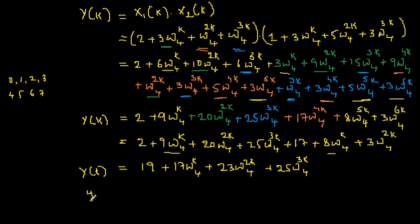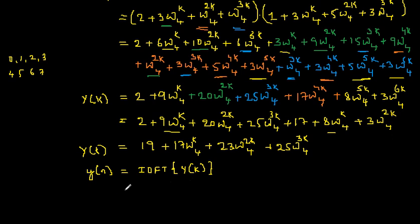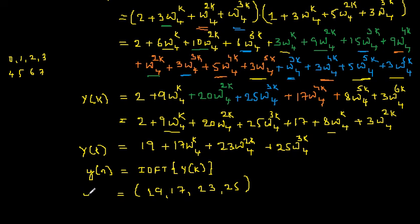Lastly, I need to find Y(n), which is equal to the IDFT of Y(k). The expression is already in standard format, so I can directly read off the result: Y(n) = {19, 17, 23, 25}. This is the final answer for y(n), which is the circular convolution of x1(n) and x2(n). Hope the concept is very clear.